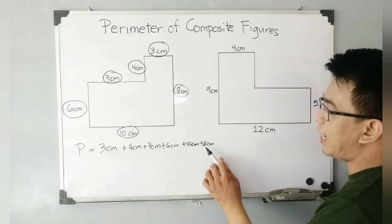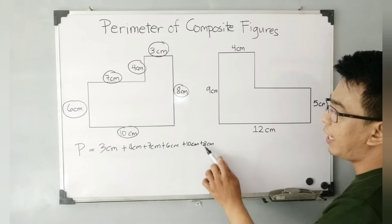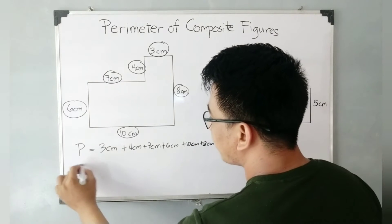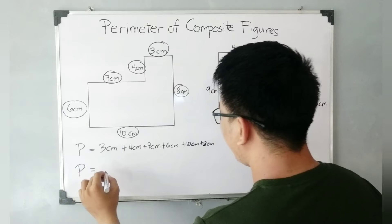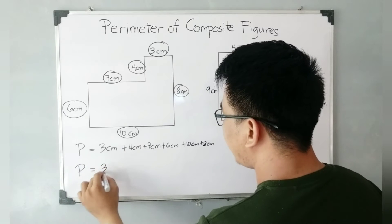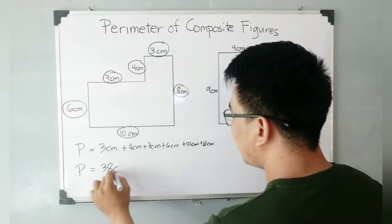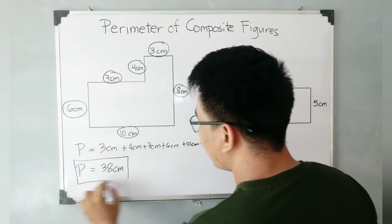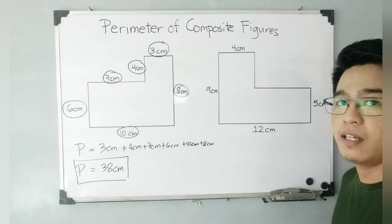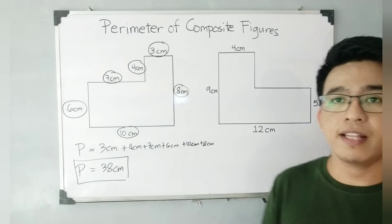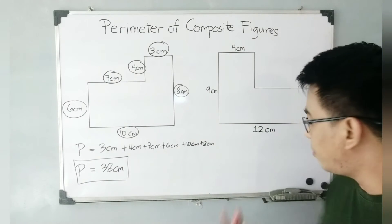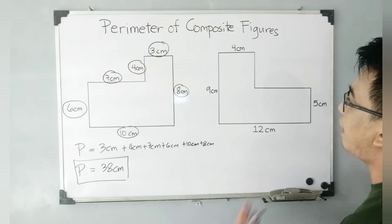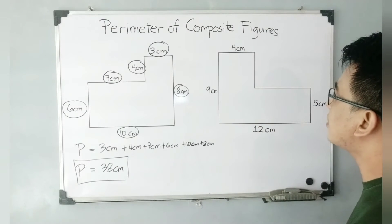That will give you 14 centimeters, and plus six that will be 20 centimeters, plus 10 that is 30 centimeters. And lastly you have eight centimeters, that will give you the perimeter that is equivalent to 38 centimeters. This is the perimeter of the first given composite figure.